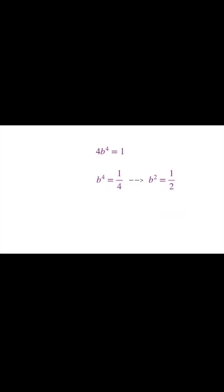Solving that for b to the fourth gives us b to the fourth is 1 fourth. Now we can take the square root of both sides which would give us b squared as plus or minus a half, but we don't want b to be an imaginary number, so we'll just take the positive answer. So b squared has to be a half if b is going to be a real number.